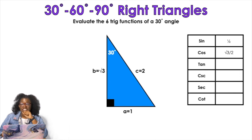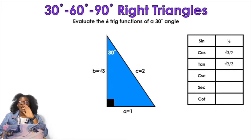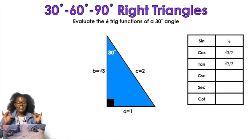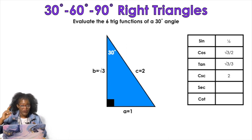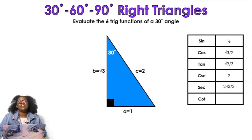For tangent using TOA: opposite of the 30-degree angle is 1, adjacent is root 3, so tangent is 1 over root 3, which rationalized is root 3 over 3. Now the reciprocals: cosecant is the reciprocal of sine, so 1/2 flipped is 2 over 1, which is just 2. Secant is the reciprocal of cosine, so root 3 over 2 flipped gives 2 over root 3, which rationalized is 2 root 3 over 3.